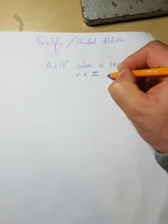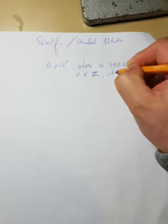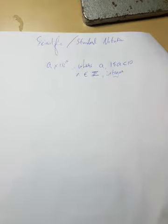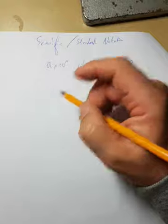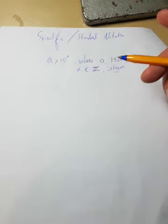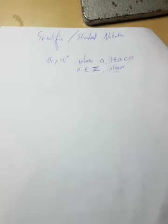So n is an integer — a whole positive or negative number. It's pretty straightforward. I'm going to go through a few examples to show you how we write something in scientific notation.